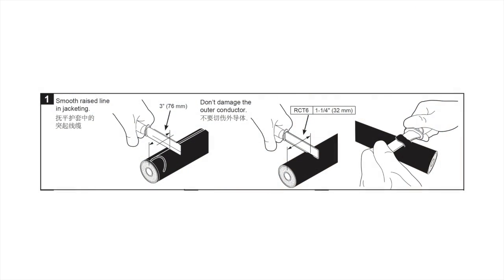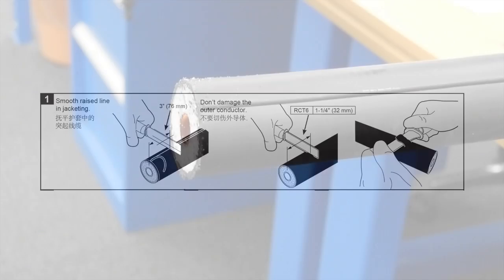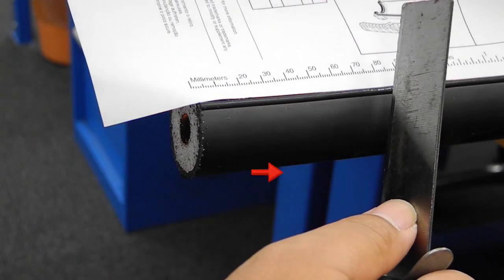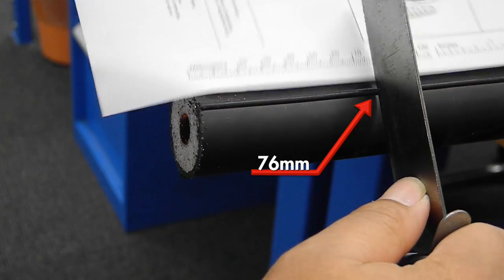Position the cable with the ridge on top. Use a hacksaw to cut the cable end flush. Use the included guide to measure back 76mm along the ridge and trim the ridge flush with the jacket.